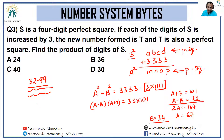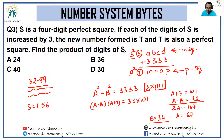The question asks for the product of the digits of S. S turned out to be 1156 (which was b²). The product of digits is 1 × 1 × 5 × 6 = 30.